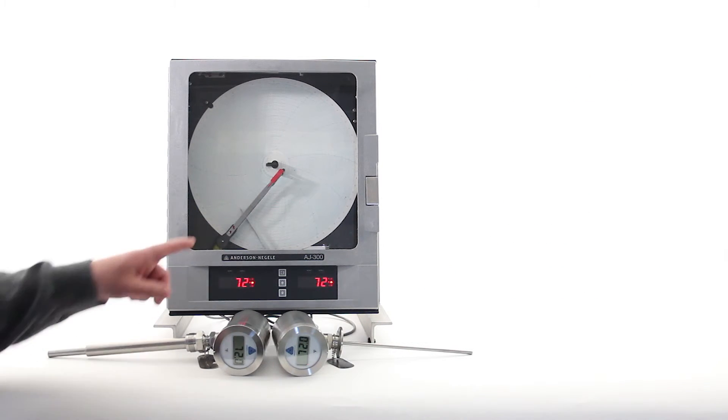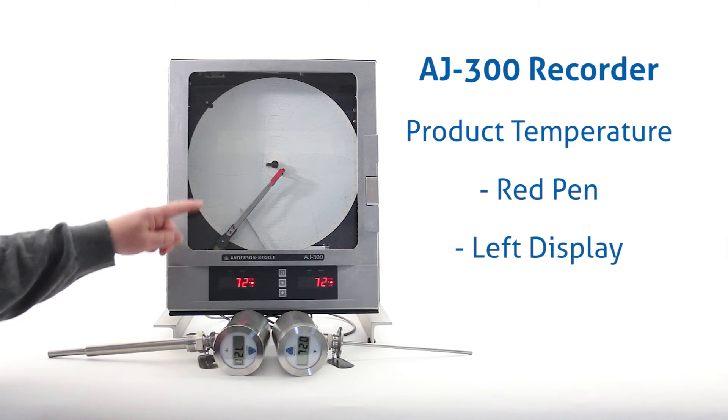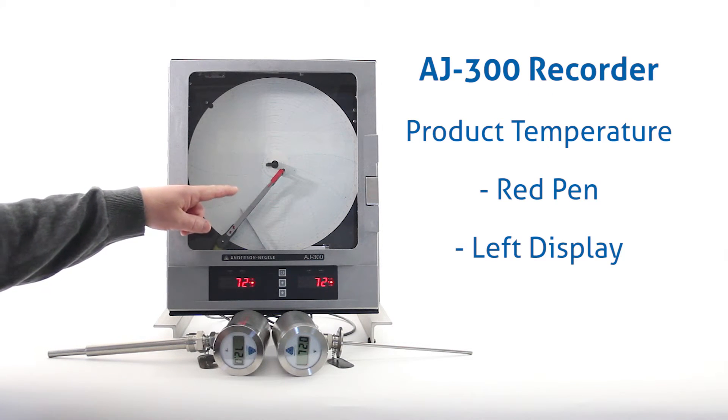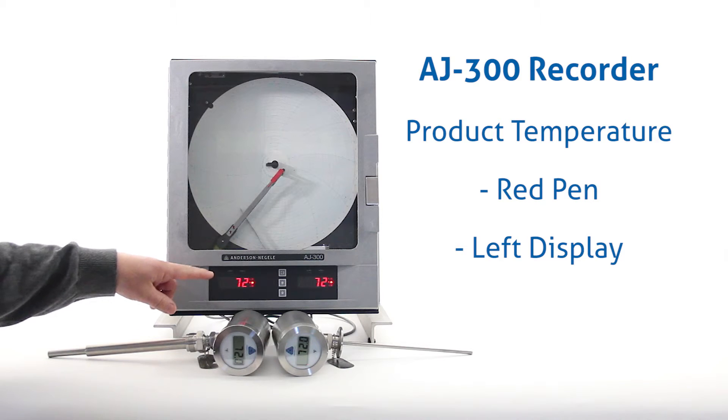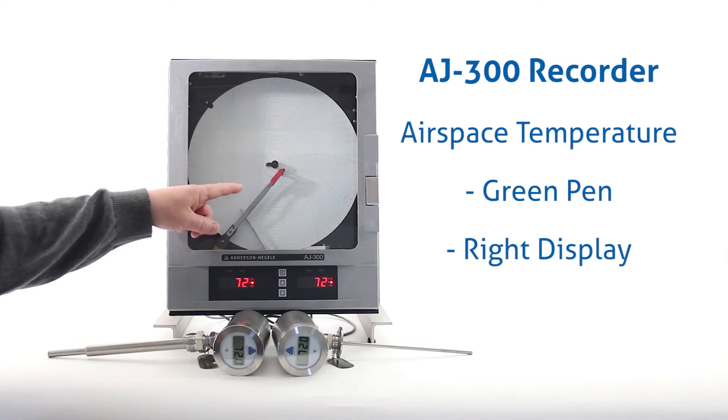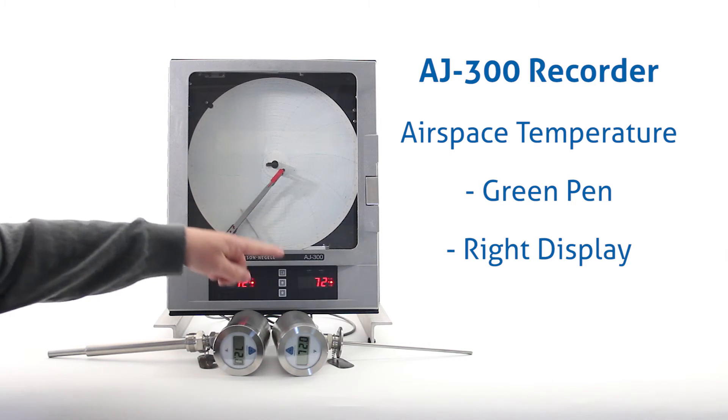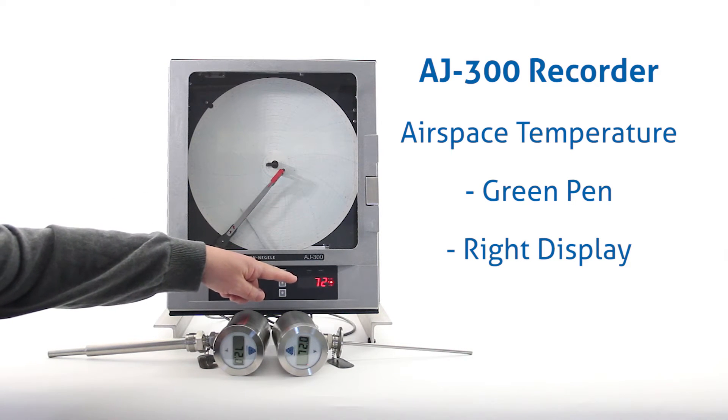The first component is the AJ300 recorder, which records the product temperature with the red pen and displays the product temperature on the left hand display. It also records the airspace temperature with the green pen and displays the airspace temperature on the right hand display.